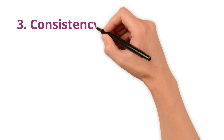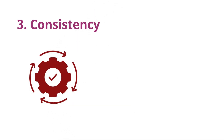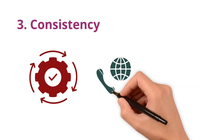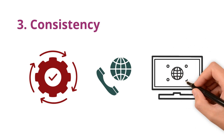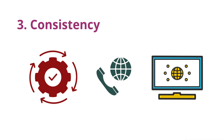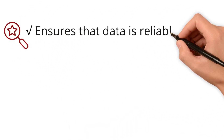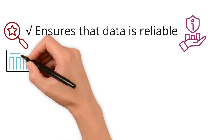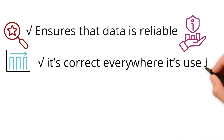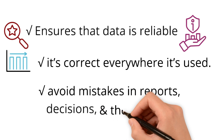Consistency checks if data is the same no matter where you look. For example, a phone number should match across all systems — it shouldn't exist with an international code in one place and not in another. Maintaining consistency is important because it ensures the data is reliable and can be trusted. When data is consistent, you know that it's correct everywhere it is used, which helps avoid mistakes in reports, decisions, and thereby processes.